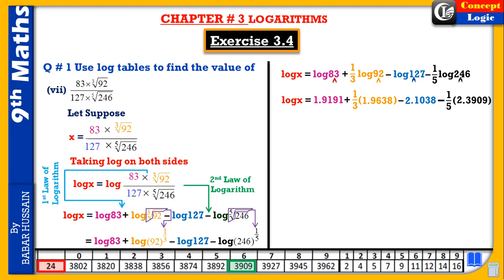In the next step, we write values as they are. Dividing 1.9638 by 3 gives 0.6546. The next value stays as is, and dividing 2.3909 by 5 gives 0.4782. In the next step we add all these values and after simplification the answer comes to minus 0.0083.